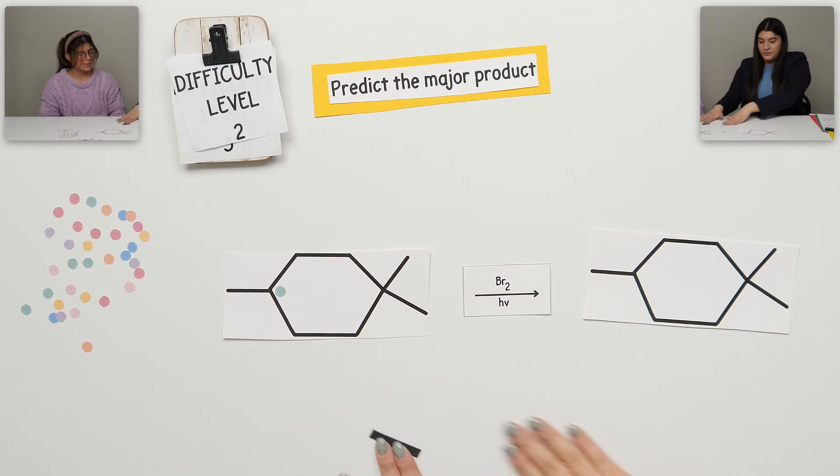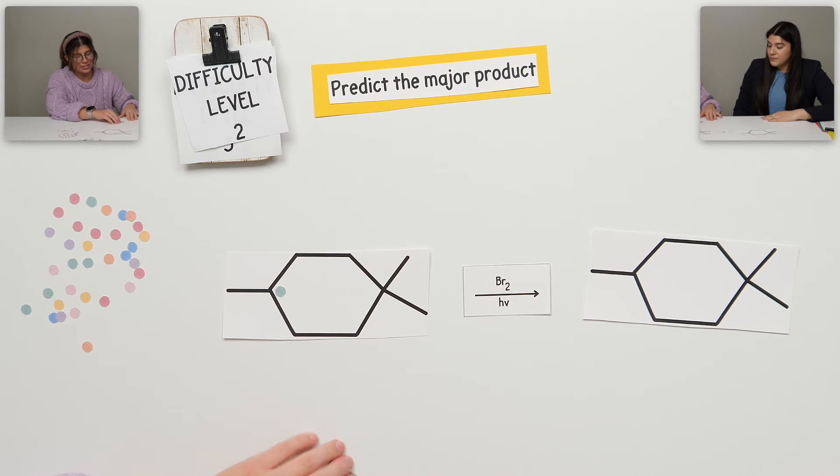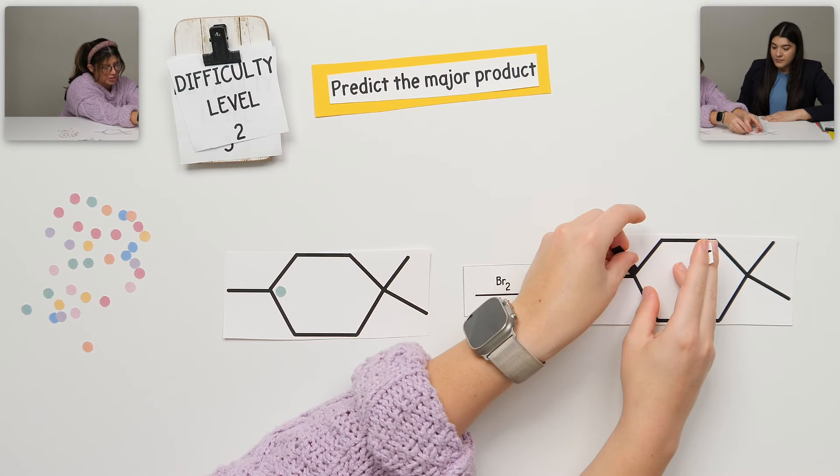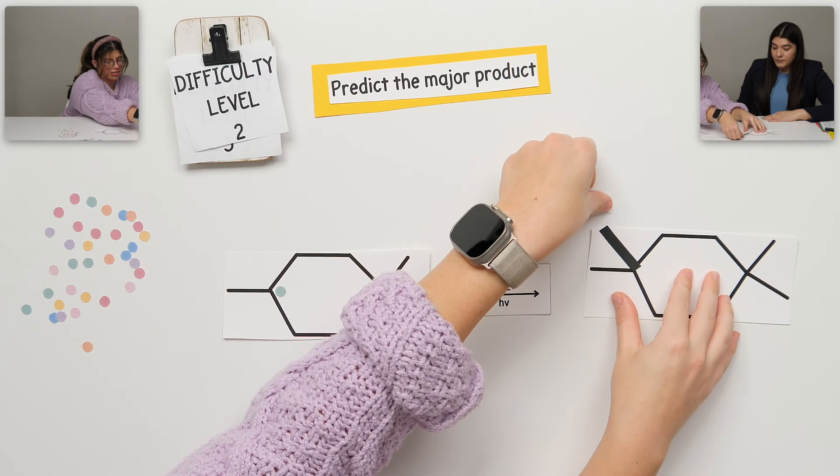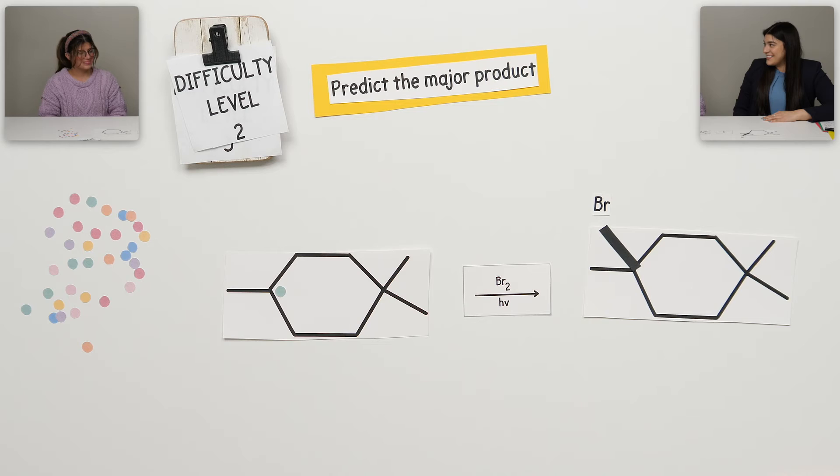So let's draw it out. Let's build our product. So now we just basically replace the radical with the halogen. It would look like that. Perfect. That's it.